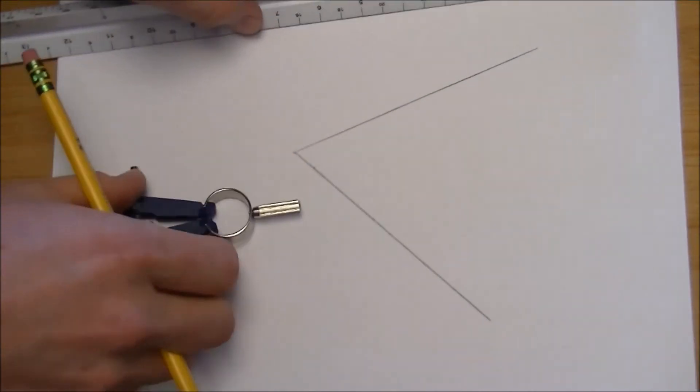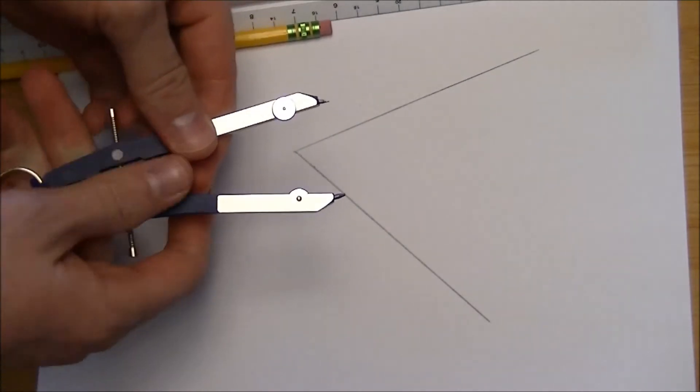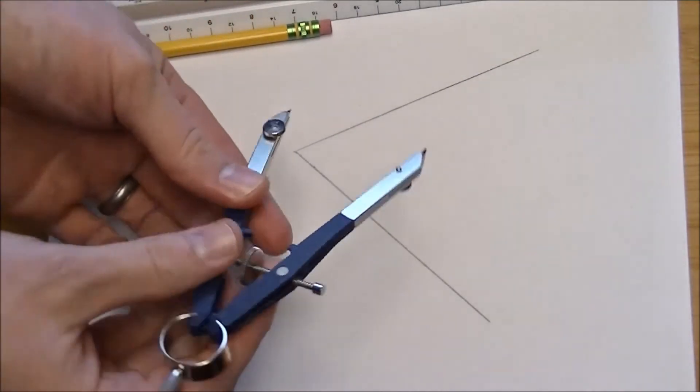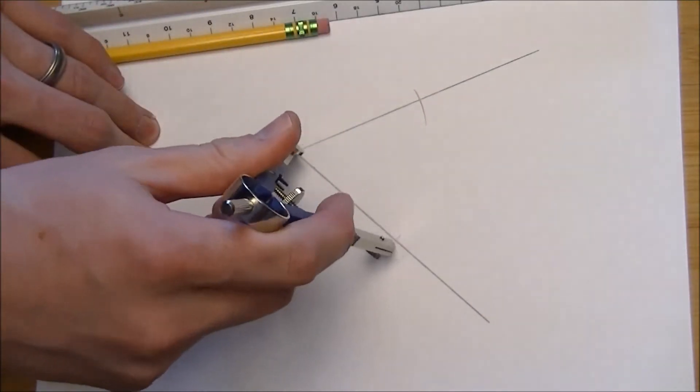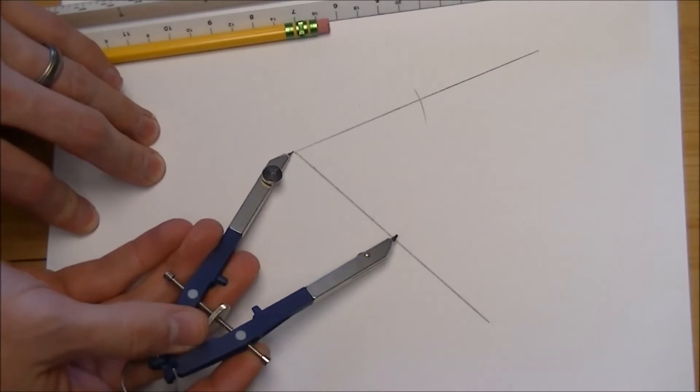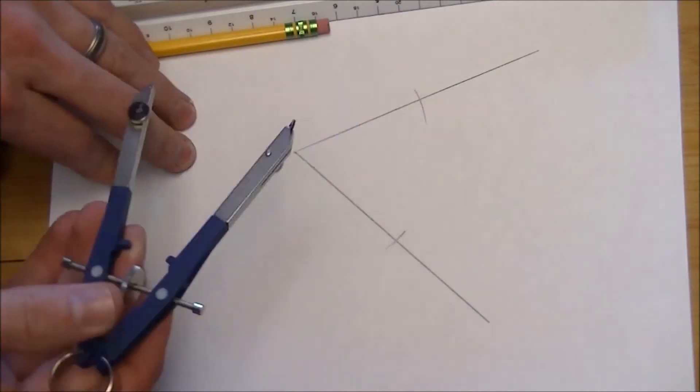So let's go ahead and start off. What you're going to do is open up your compass and make marks there. And you set your compass point on the vertex and then just make marks.